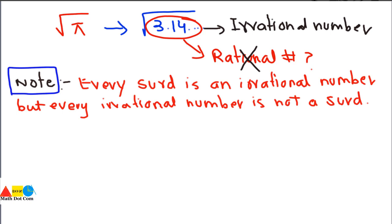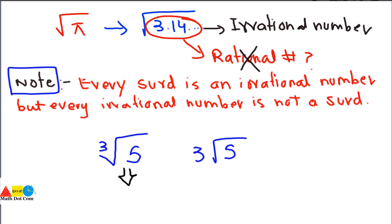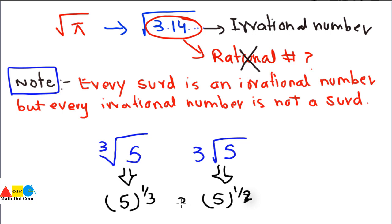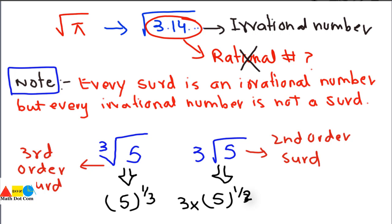One more important concept: many people confuse notation. For instance, the difference between the cube root of 5 (written with a small 3 inside the radical) and 3 times the square root of 5. The cube root of 5 means the third-order radical of 5, while 3√5 means the square root of 5 multiplied by 3. The first is a third-order surd and the second is a second-order surd. Keep the difference between them in mind.